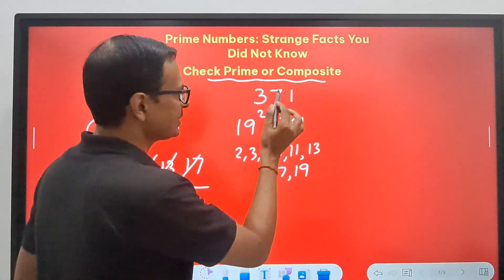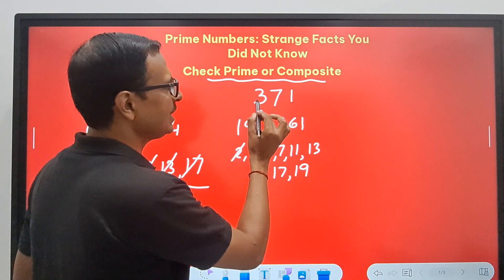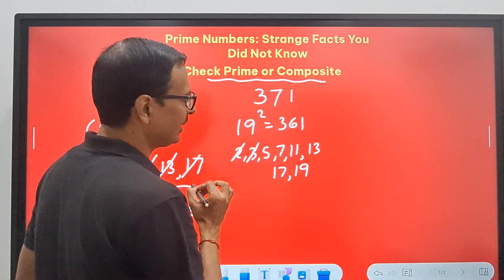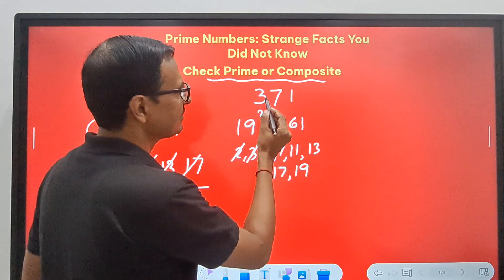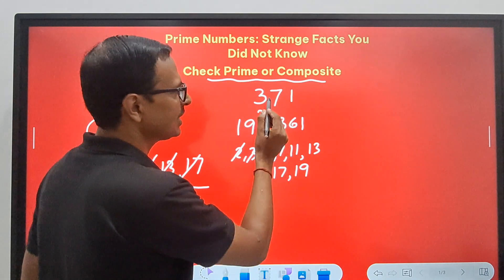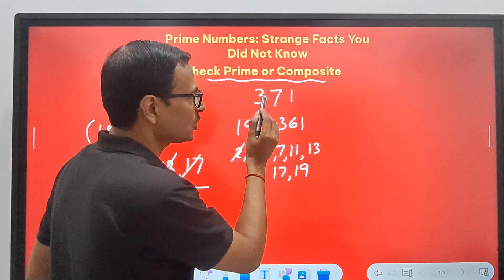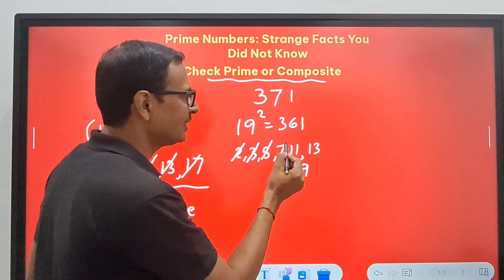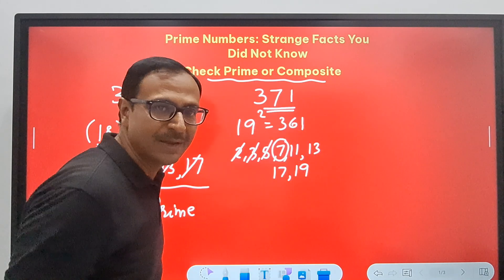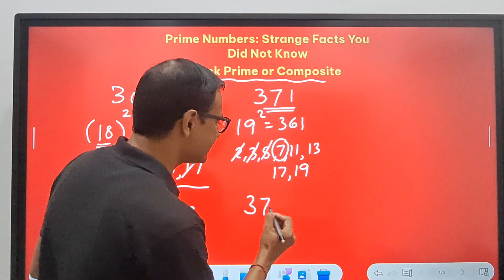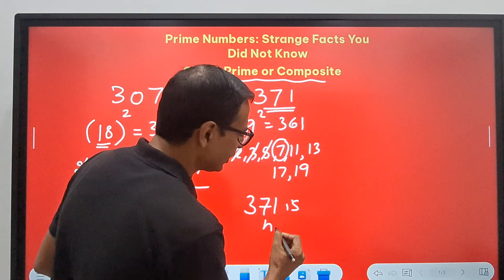Now let's check. 2 doesn't divide this obviously. 7 plus 3 is 10, plus 1 is 11, doesn't divide. 3 doesn't divide. 5 obviously doesn't divide it. 7, 5 times 7 is 35, so 21, and there we go. This number 7 actually divides 371, and therefore 371 is not prime.